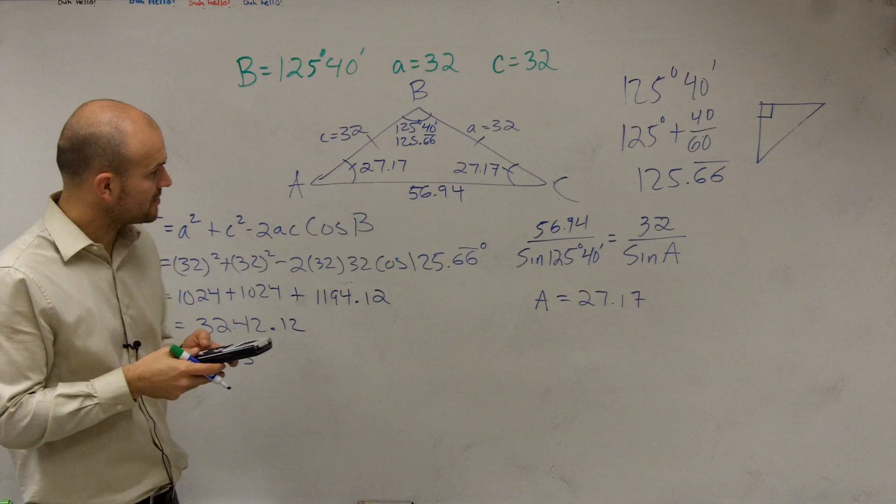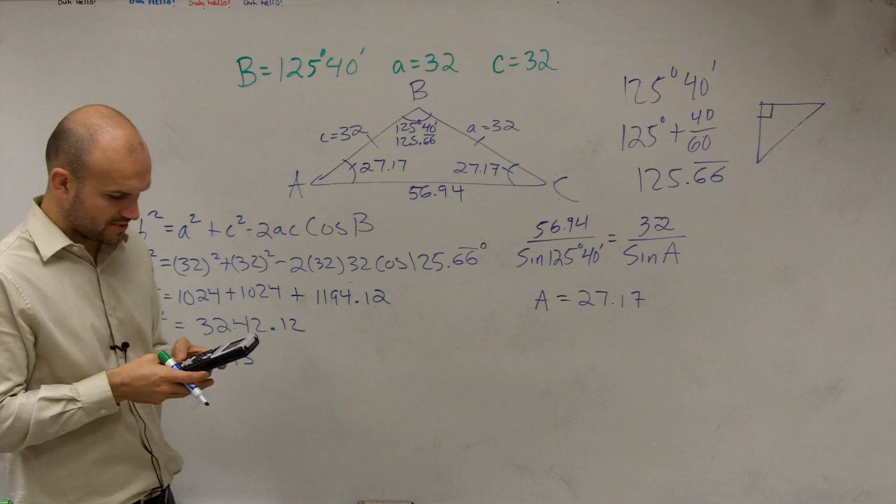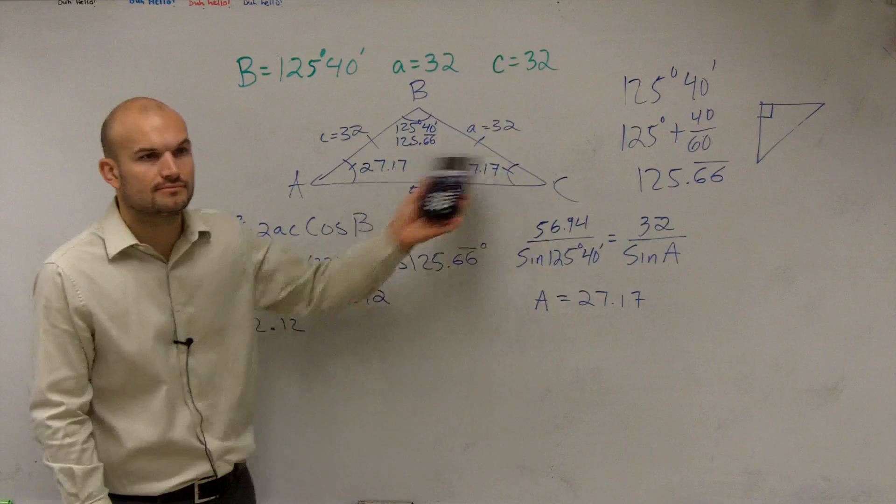And these are all going to be, you know, approximate as we're looking at there, and then I could add plus 27.17 plus 125.66. And you're going to get 180, right? So you can work with that there.